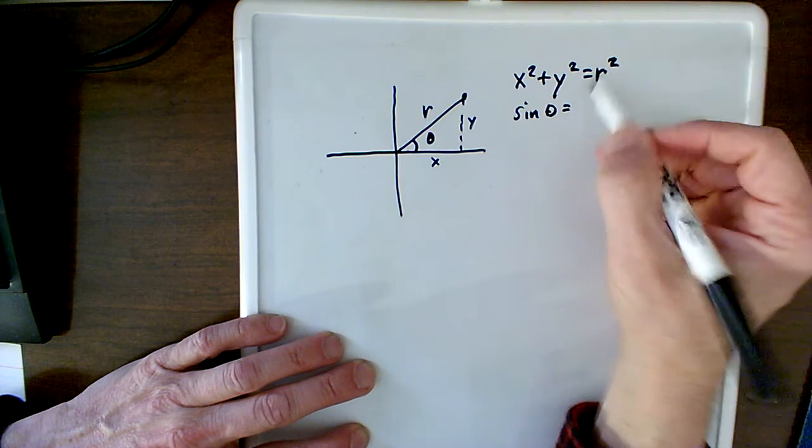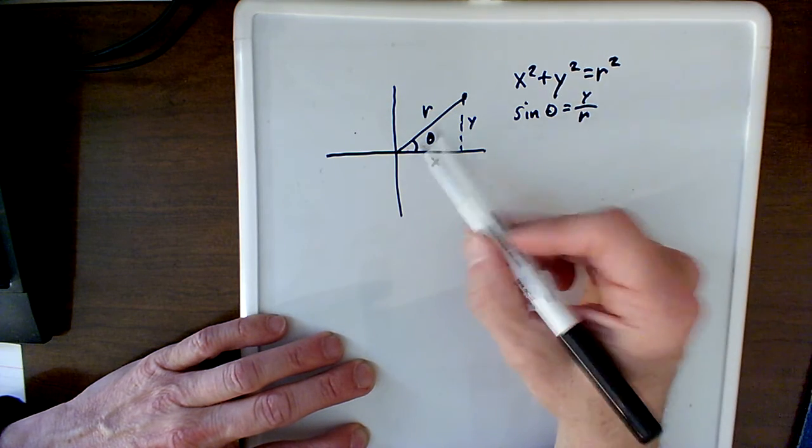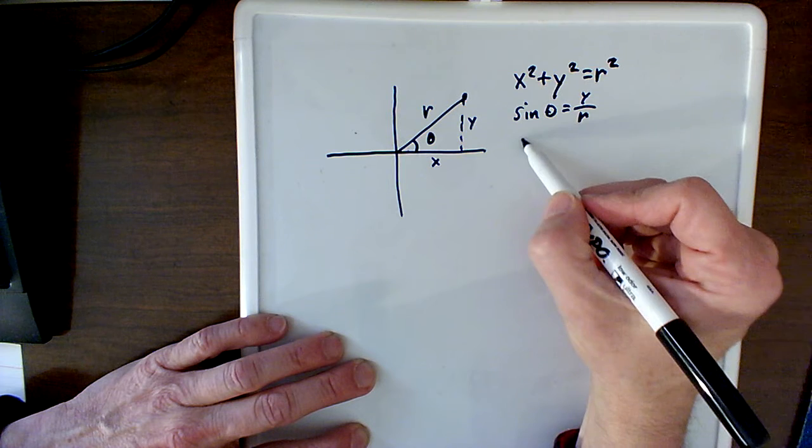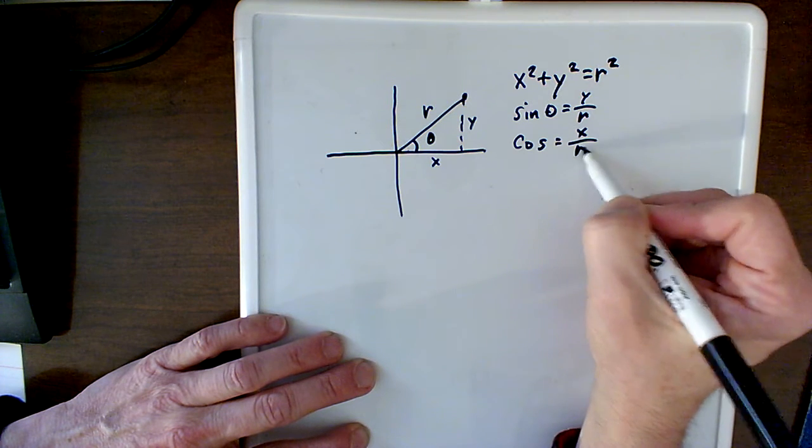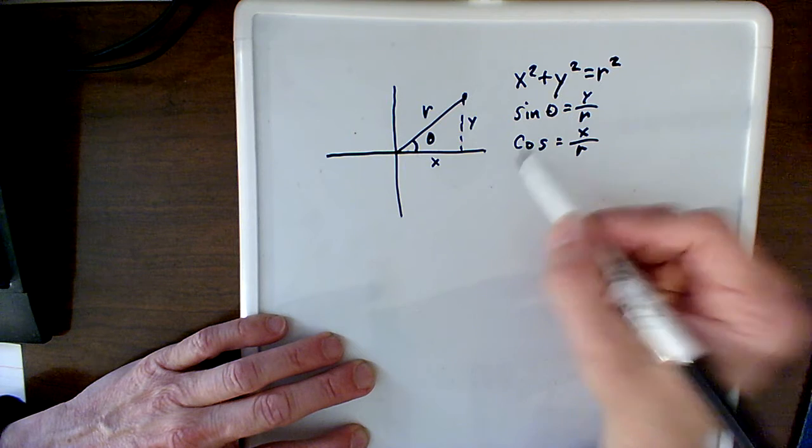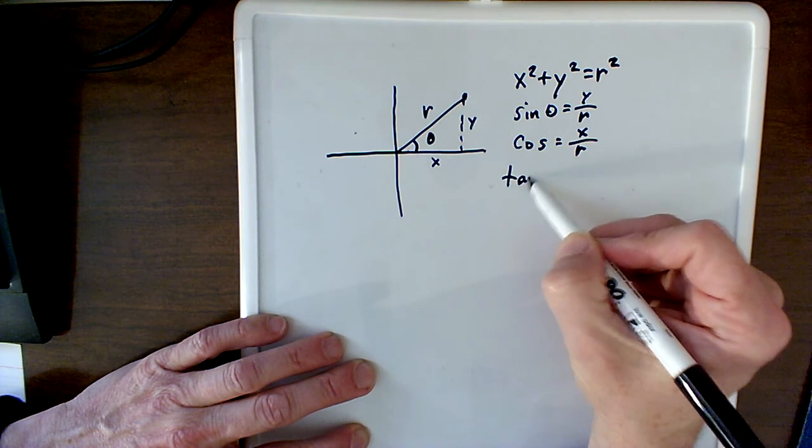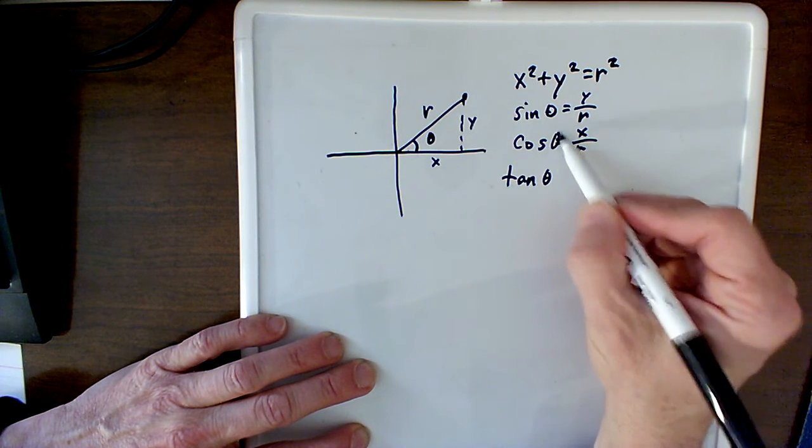Same thing with the cosine. Adjacent over hypotenuse is cosine, so that's x over r. Tangent is opposite over adjacent which is y over x.